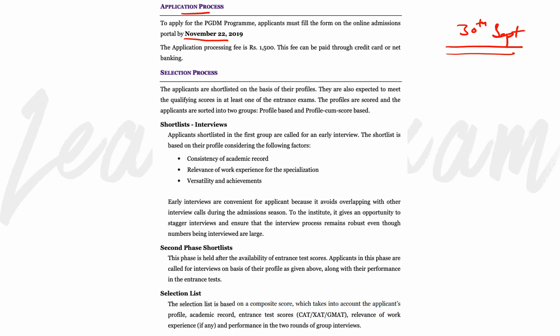Please make sure to share this video — many students don't know that SPJAIN is a profile-based call. Students with 90% in academics and all sections cleared still miss this because they don't know that SPJAIN selection involves a form and a profile evaluation — it's not just about the CAT score. The selection process involves a shortlist based on your profile: academics and other achievements, followed by a second phase which includes an interview.